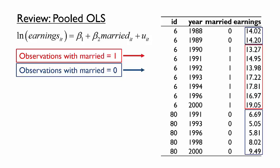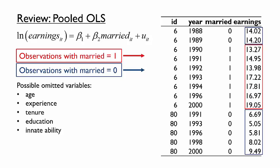What if there is something else about those observations that would explain any difference in earnings? For example, do men earn more when they are married because they tend to be older, and older men tend to earn more? We could add age as a control to address this concern. Perhaps other control variables are also important, such as years of work experience, job tenure, education, or innate ability.